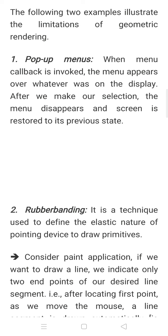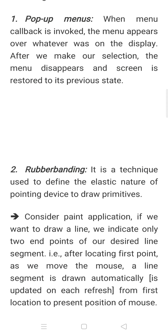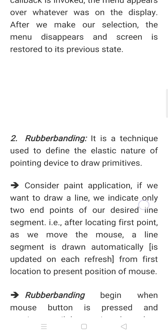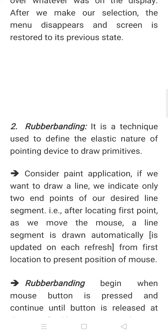Rubber banding is a technique used to define the elastic nature of the pointing device to draw primitives. Suppose you want to draw a curve in a paint application — you take the paint application, go to the line style tool, make a click with the left mouse button, drag the mouse, and once you release, a curve or line structure will be drawn. This needs some additional effort in OpenGL and is one of its limitations — we cannot easily draw curves as in previous discussion.